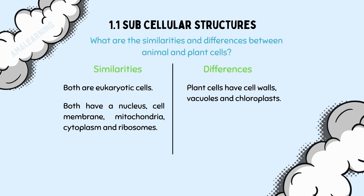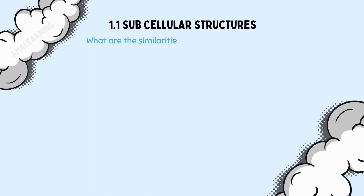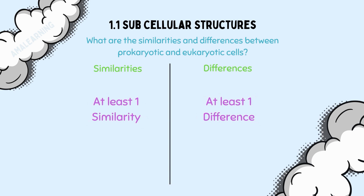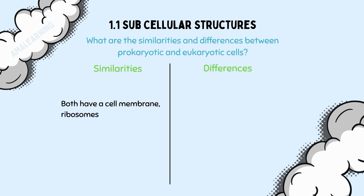You will also be asked questions such as: what are the similarities and differences between prokaryotic and eukaryotic cells? The question might be worded in a straightforward manner, or they may ask you to compare and contrast, meaning looking for similarities and differences between two things. The answer must relate to both cell types and must include at least one similarity and one difference. Correct answers for similarities include: both have a cell membrane, ribosomes, and cytoplasm.